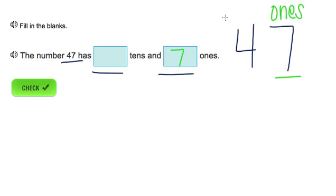And now let's look for our tens place, which is directly to the left of our ones place. So we have four tens. So the number 47 has four tens and seven ones.